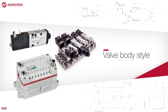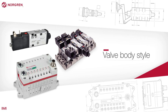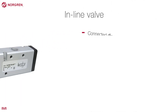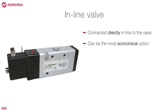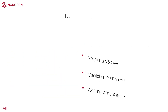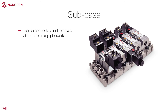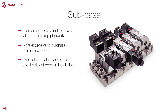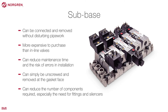The way in which a valve is attached to a system depends on the valve body style. The three most common styles are: inline, where the pipework is connected directly inline to the valve and can be the most economical option; manifold mounting of inline valves, which allows common supply and exhausts with working ports 2 and 4 connected individually; and sub-base, which allows valves to be connected and removed without disturbing pipework. Although more expensive to purchase than inline valves, sub-base valves can considerably reduce maintenance time and the risk of errors in installation, and drastically reduce the number of components required, especially fittings and silencers.